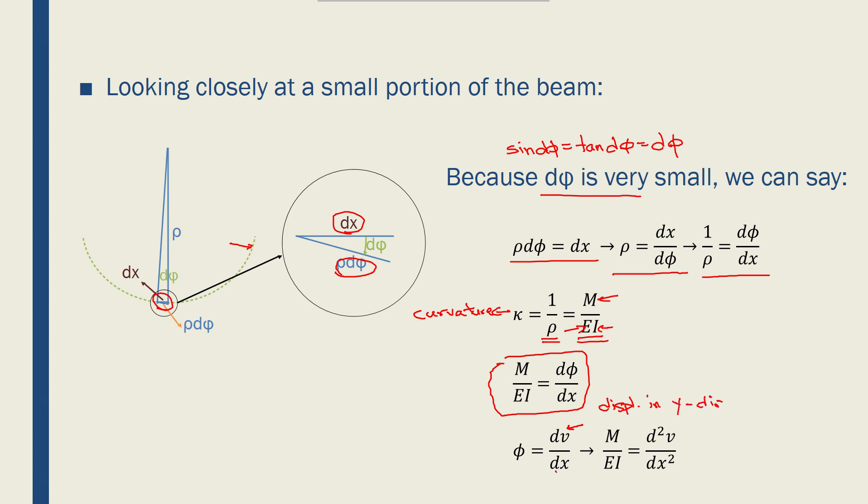So we end up with this equation: M over EI is equal to d²v over dx squared.